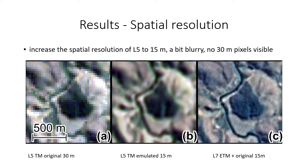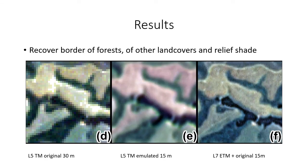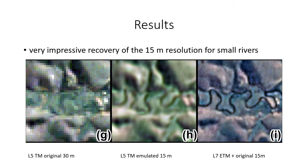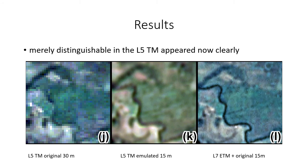Our model reaches super resolution — it is able to recover L5 data at 15 meter spatial resolution from only L5 data at 30 meter resolution. The model manages to recover forest borders, borders of other land cover, and relief shade. The model performs extremely well to recover the spatial information of small rivers that are almost not visible in the original L5 images. Here is another example of a river: the model recovers very well the channel and some linear details that are not visible in the L5 image at 30 meter resolution.